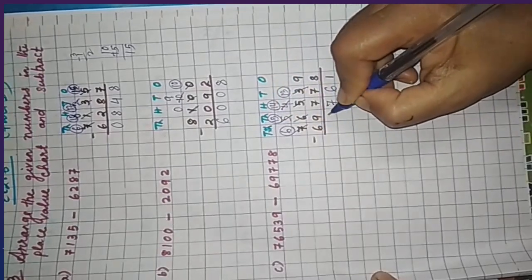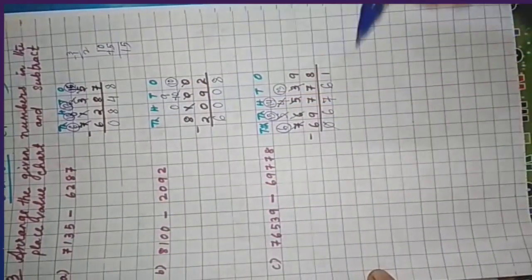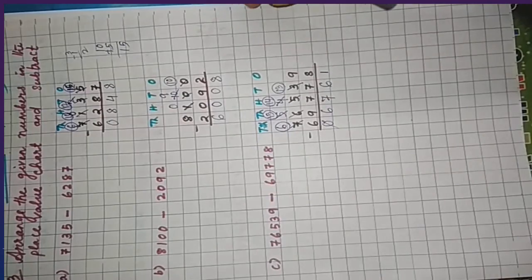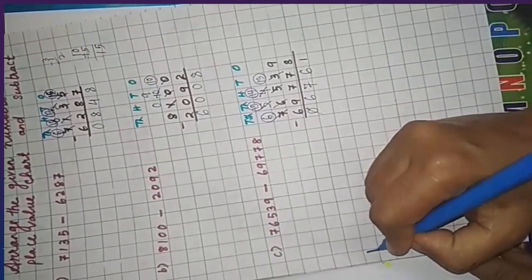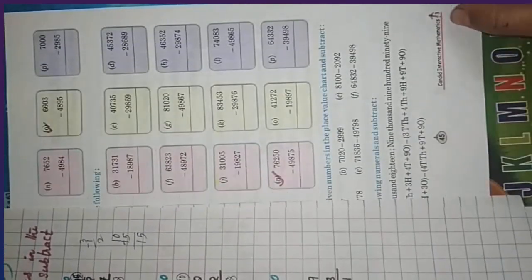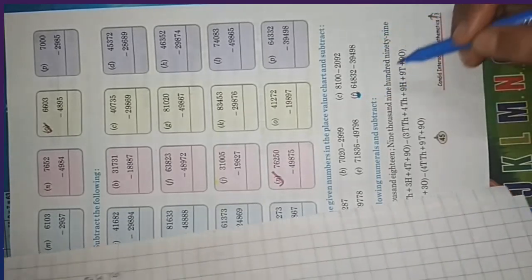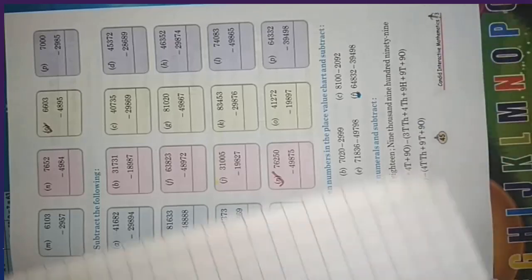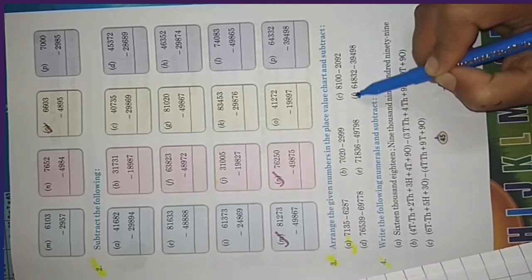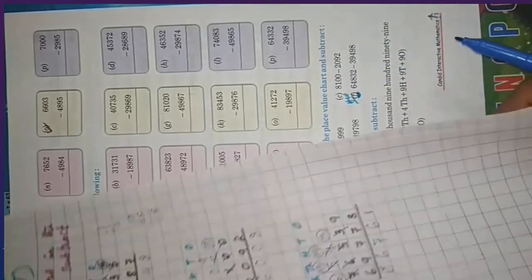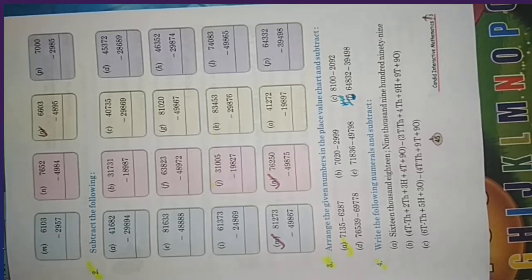It becomes 15. 15 minus 9 is 6, and 6 minus 6 is 0. You can cut this 0 because a 0 on the extreme left has no value. The answer is 6761. Now for homework, solve part (f): 64832 minus 39498. Note it in your notebook. Now move to question number 4.